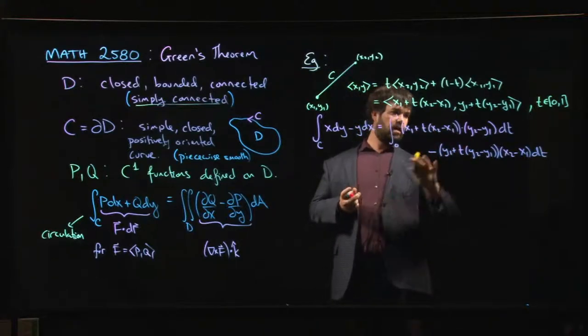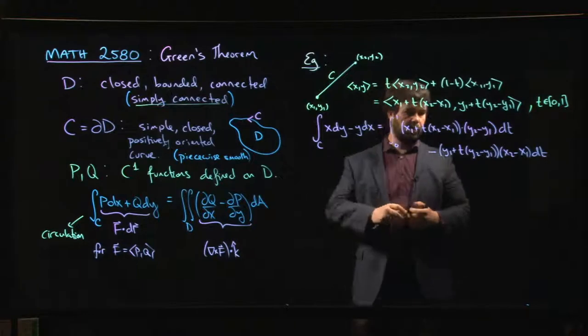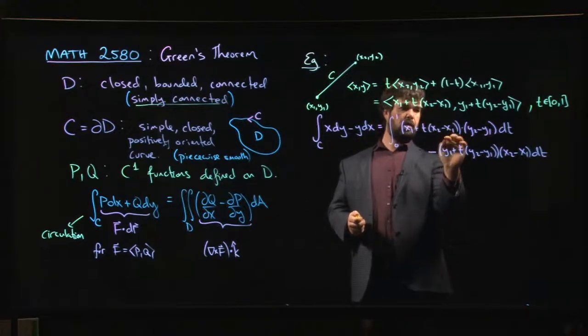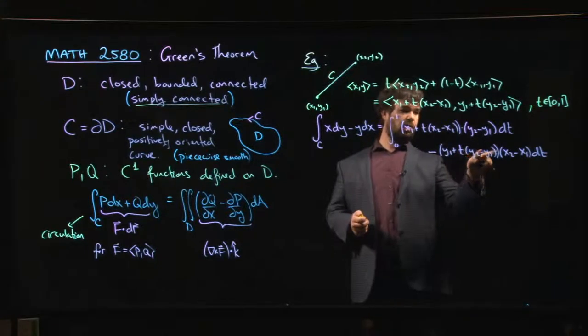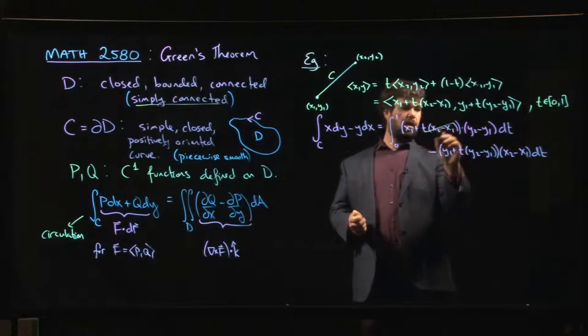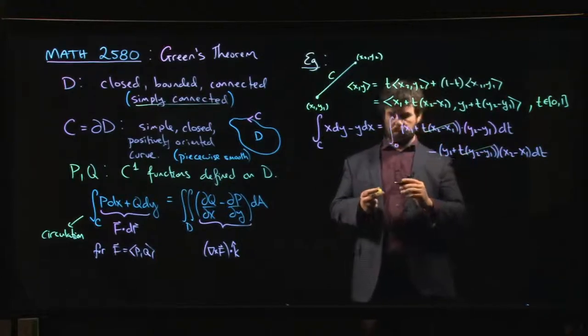Now, one of the things you'll notice is that if you multiply everything out and you simplify, here you have t times x2 minus x1 times y2 minus y1. Here you have t times those same two factors. So this part and this part, those are going to cancel.